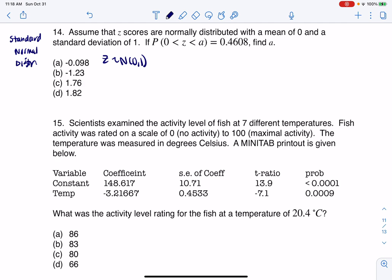All right, and it wants us to find this a value. So if we're between 0 and a, it looks like we're shading about 46% of the area under that curve. So let's go find this and then we'll calculate this answer.